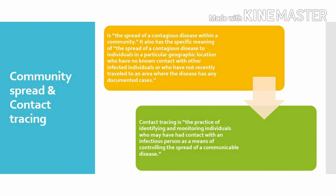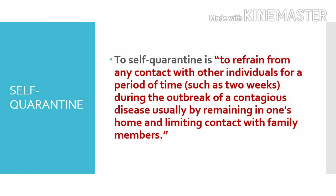Next terms: community spread and contact tracing. Community spread is the spread of a contagious disease within a community. Contact tracing is the practice of identifying and monitoring individuals who may have had contact with an infectious person, as a means of controlling the spread of a communicable disease.